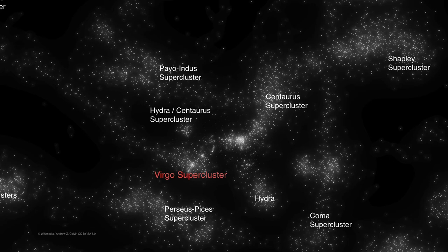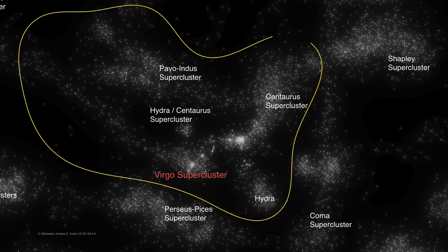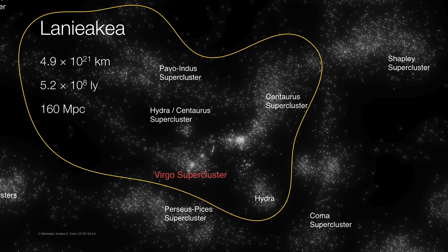And it turns out that all of these superclusters form a great complex called Laniakea. Laniakea is Hawaiian for 'immeasurable heaven.' This gravitational relationship was discovered fairly recently, and it's about five times larger than the Virgo supercluster.